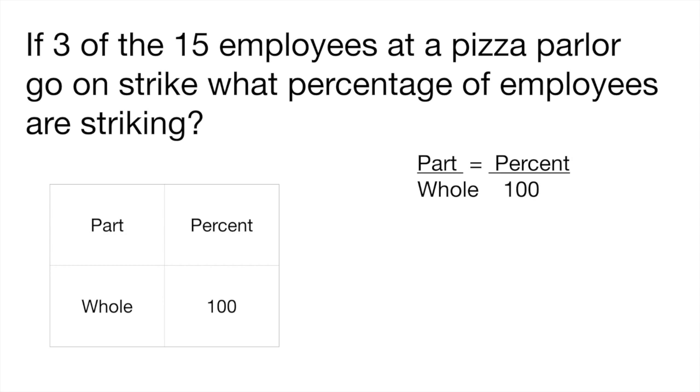So we know that there is a total of 15 employees at the pizza parlor. So 15 would be the whole. Okay out of those 15 employees, three of them are striking. Okay so number three would be the part. So there you go you have your left part of your equation already set up. And then the question is asking you what percentage of employees are striking? So on the right side you would write x divided by 100 because x the percentage is what they want you to find out. Okay so if you do it this way it's going to be super easy for you to solve any percentage problems.